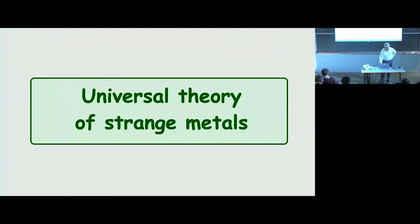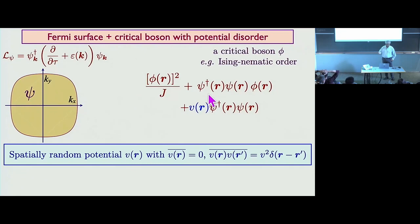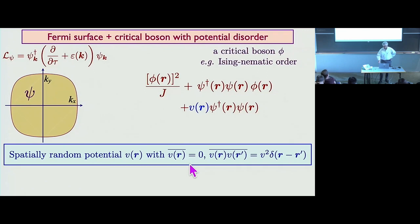We have to put in disorder. Let's take the same theory of a scalar field coupled to a Fermi surface and add a random potential — this is what you do in the theory of disordered metals. There you have this very successful and beautiful theory with Altshuler-Aronov-type corrections to the conductivity of a disordered Fermi liquid — so Fermi liquid behavior survives. Now you can ask: what is the effect of this potential disorder on the quantum critical point? If you put in this random potential and go through the same Eliashberg-type analysis that Patrick Lee had looked at...